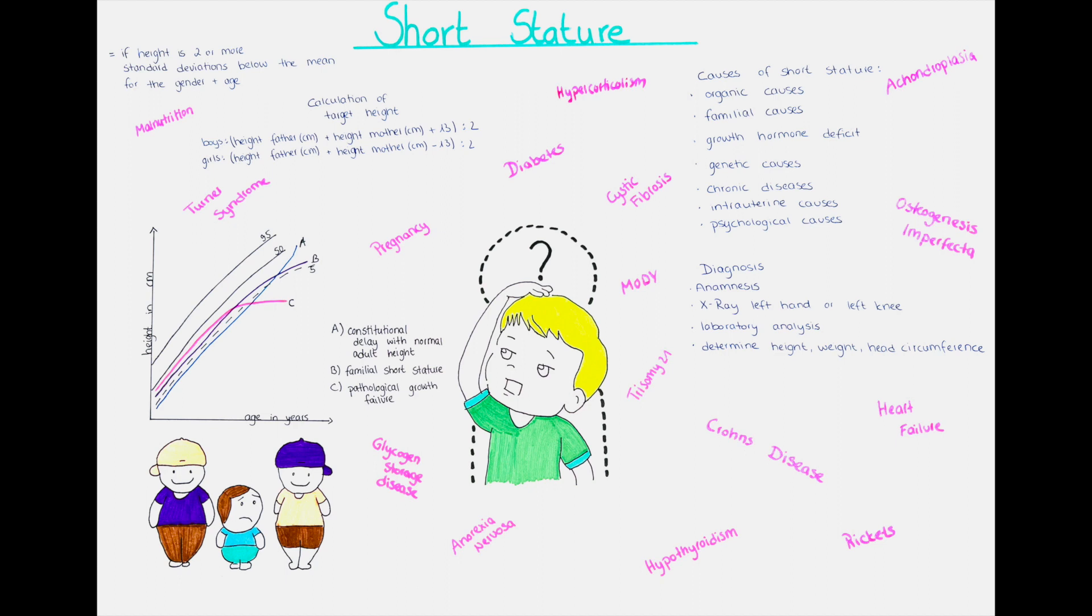I want to quickly recap how we calculate the target height for a child. So for a boy we calculate the height of the father in centimeters plus the height of the mother in centimeters plus 13 and then all that divided by 2. For girls we calculate the height of the father in centimeters plus the height of the mother in centimeters minus 13 and then all that divided by 2.